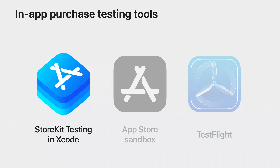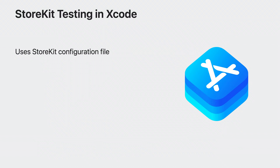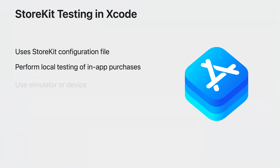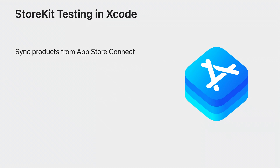Starting with StoreKit Testing in Xcode. We introduced StoreKit Testing in Xcode at WWDC20. It enables you to test in-app purchases without setting up your products in App Store Connect. You can test your in-app purchases fully offline without requiring a server. It provides you with the ability to create and manage your in-app purchases in the StoreKit configuration file, so you can test your code changes locally and in real time. As you begin your StoreKit integration, you can test using simulator or a device. You can also sync your in-app purchase products from App Store Connect to Xcode, which alleviates the need to set up a StoreKit configuration file manually.